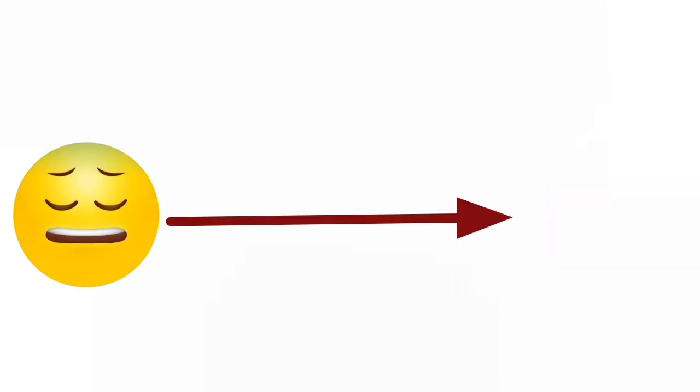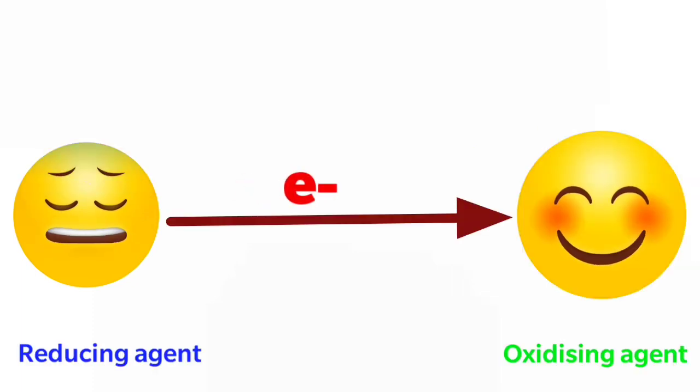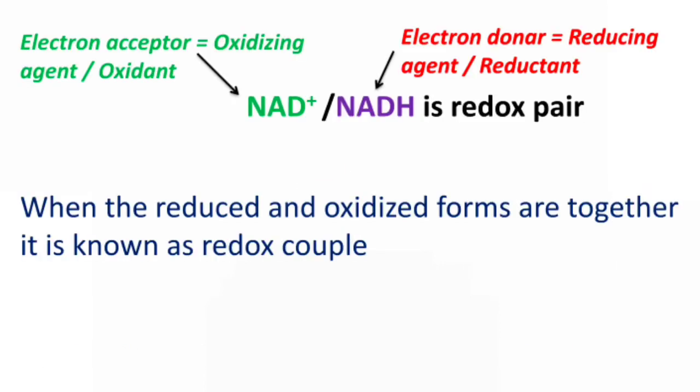Oxidation of a compound, that is, loss of electrons from a compound, always results in the reduction of the second compound. Reduction means gain of electrons. So, loss of electrons from a compound results in the gain of electrons by the second compound. In simple terms, when the reduced and oxidized forms are together, that is known as the Redox Couple.